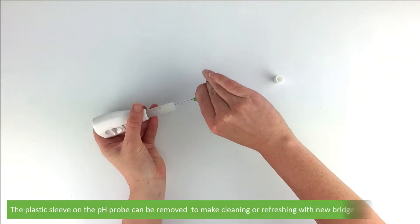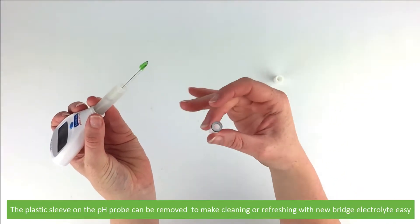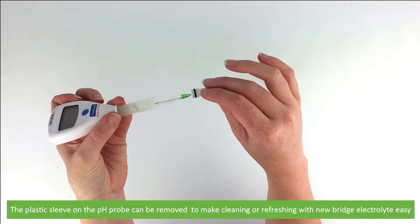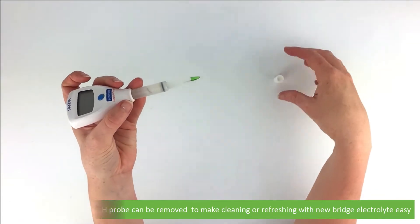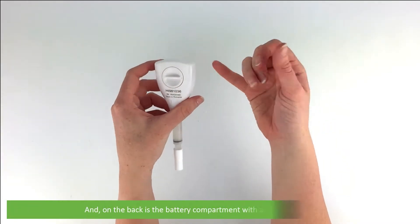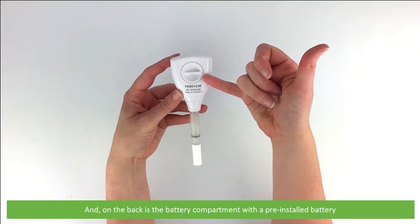The plastic sleeve on the pH probe can be removed to make cleaning or refreshing with new bridge electrolyte easy. And lastly on the back is a battery compartment that comes with a pre-installed battery.